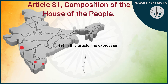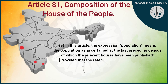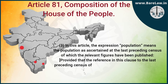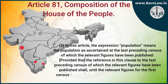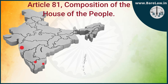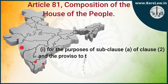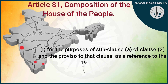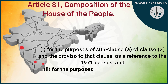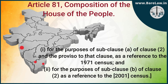Sub-Clause (3): In this article, the expression 'population' means the population as ascertained at the last preceding census of which the relevant figures have been published; provided that the reference to the last preceding census shall, until the relevant figures for the first census taken after the year 2026 have been published, be construed — (i) for the purposes of Sub-Clause (a) of Clause (2) and the proviso to that clause, as a reference to the 1971 census; and (ii) for the purposes of Sub-Clause (b) of Clause (2), as a reference to the 2001 census.